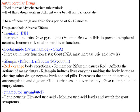Next is rifampin, also rifabutin — they're kind of the same drug. An adverse effect could be red-orange body secretions. A good way to remember this mnemonically would be: rifabutin causes red. Also, rifabutin affects the action of many drugs — it induces liver enzymes, making the body better at clearing other drugs. It negates the birth control pill completely, and decreases the action of steroids, anticoagulants, and digoxin. Also look for GI disturbances and liver toxicity, which is why you want to give rifabutin on an empty stomach.